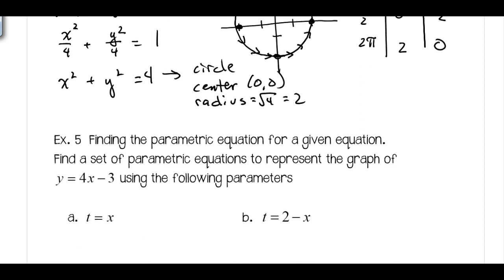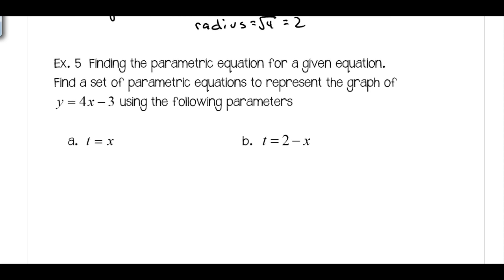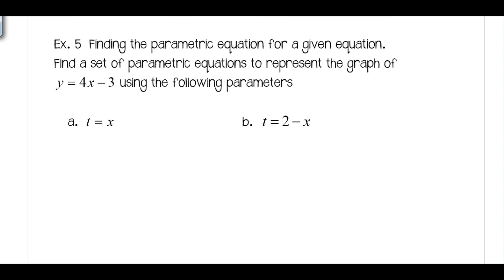Let's look at another example here. We're going to find the parametric equation for a given equation. This is a pretty straightforward process, and we're actually going to find two different parametric equations for this. You'll notice for part A, we're just going to let x equal t. That's going to be our substitution. And for part B, I'm going to make it more complicated. I'm going to let 2 minus x equal t.